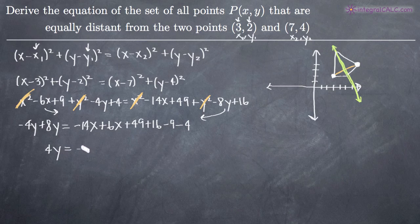So now we end up with a positive 4y on the left. We end up with a -8x on the right and then 49 + 16 is 59, 65, -9 is 56, -4 is 52. So we end up with a positive 52.